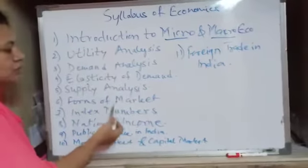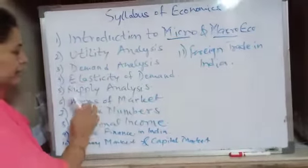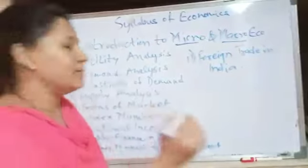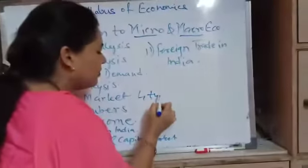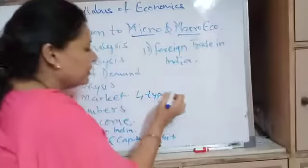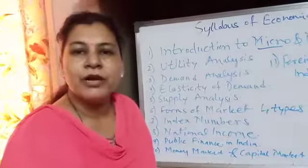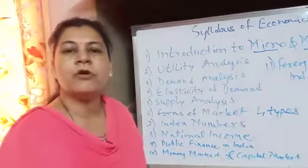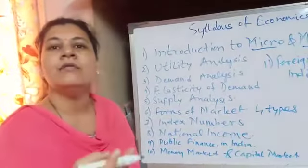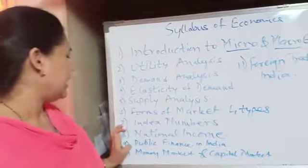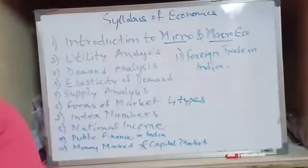Next is forms of market. There are about four types of market: perfect competition, monopoly, oligopoly, and monopolistic market. Next is index numbers.